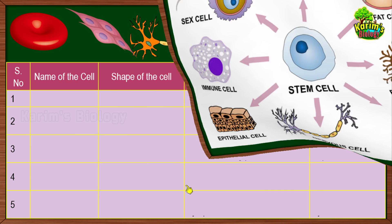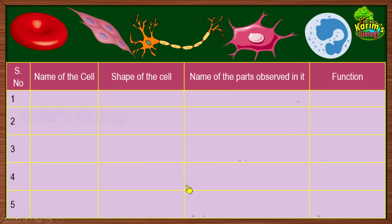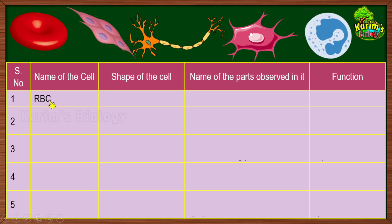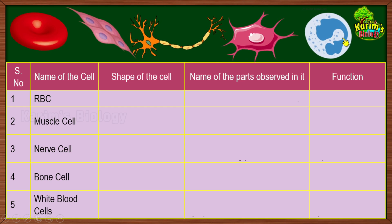These are a few exceptions. Now, once again I'm showing the pictures and we are going to analyze the cells. For all these different types of cells, we will name the cell, write the shape of the cell, and also list out where these cells are usually found and their function. The first cell is red blood cells, then muscle cells, nerve cells, bone cells, and white blood cells.